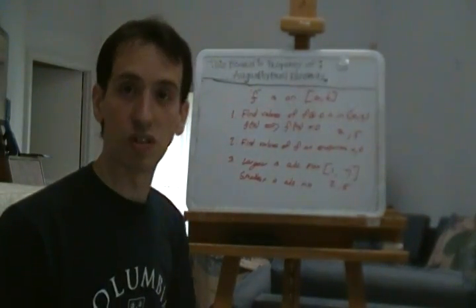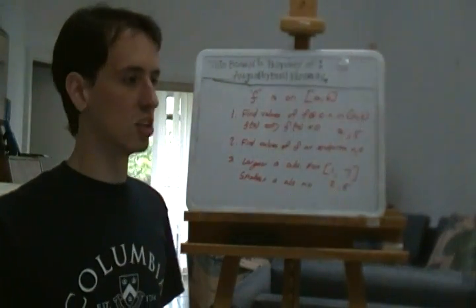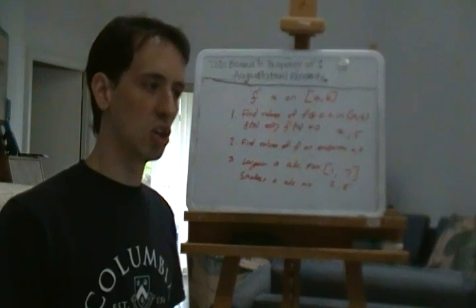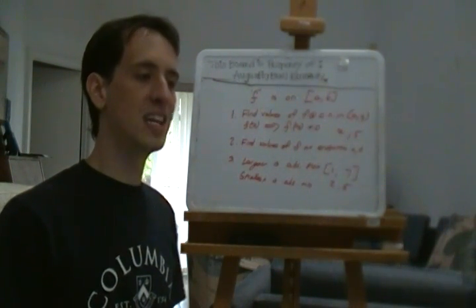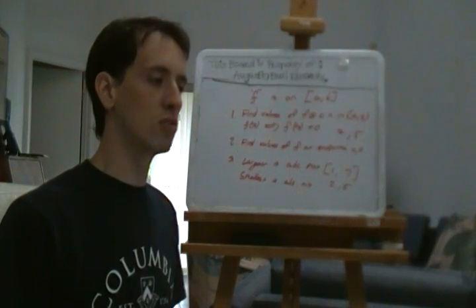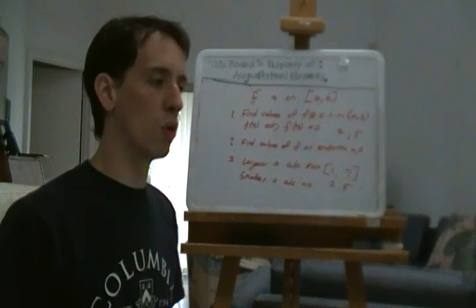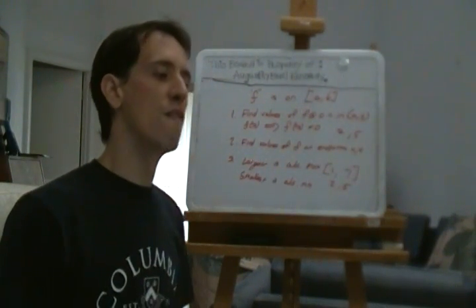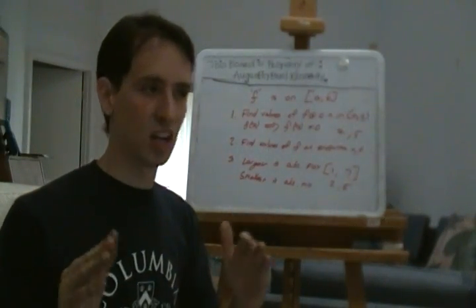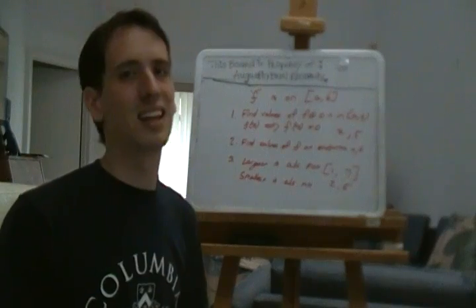So, what that means is that we're ready for the big problem for the day. Here's today's problem. Between zero degrees Celsius and thirty degrees Celsius, the volume V in cubic centimeters of one kilogram of water at a temperature T is given approximately by the formula V equals 999.87 minus 0.06426 T plus 0.0085043 T squared minus 0.0000679 T cubed. Find the temperature at which water has its maximum density. Remember, you're going to want to take that function, differentiate it, set it equal to zero, find your critical numbers, and find out what the maximum is. Alright, until then, I'm Augie Kennedy, and thanks for joining. Bye-bye.